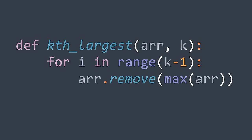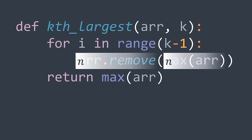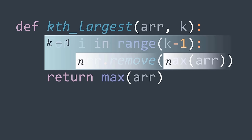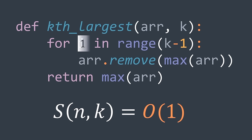In code, we have a for loop repeated K-1 times where we remove the maximum element. After the loop, we return max(r). For the time complexity, searching for the maximum costs O(n) and removing it from the array costs O(n) in the worst case. Our loop is repeated K-1 times, giving (K-1) * 2n + n total — which is O(K * n) time complexity. Space complexity is O(1) since we're not using input-size-related extra variables.